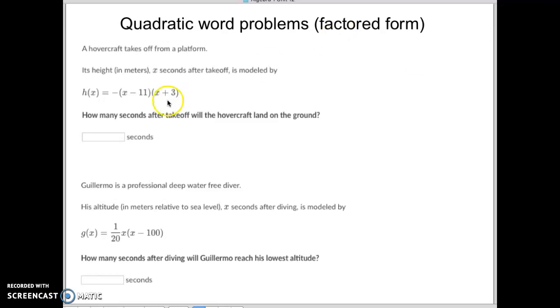You do have to read what the question is. What I mean by that is what is in the bold print, because this gives you all the clues you need to know to figure out what you're looking for. This one says how many seconds after takeoff will the hovercraft land on the ground. You need to know when something goes up and then comes back down and lands on the ground. That would be one of the x-intercepts.